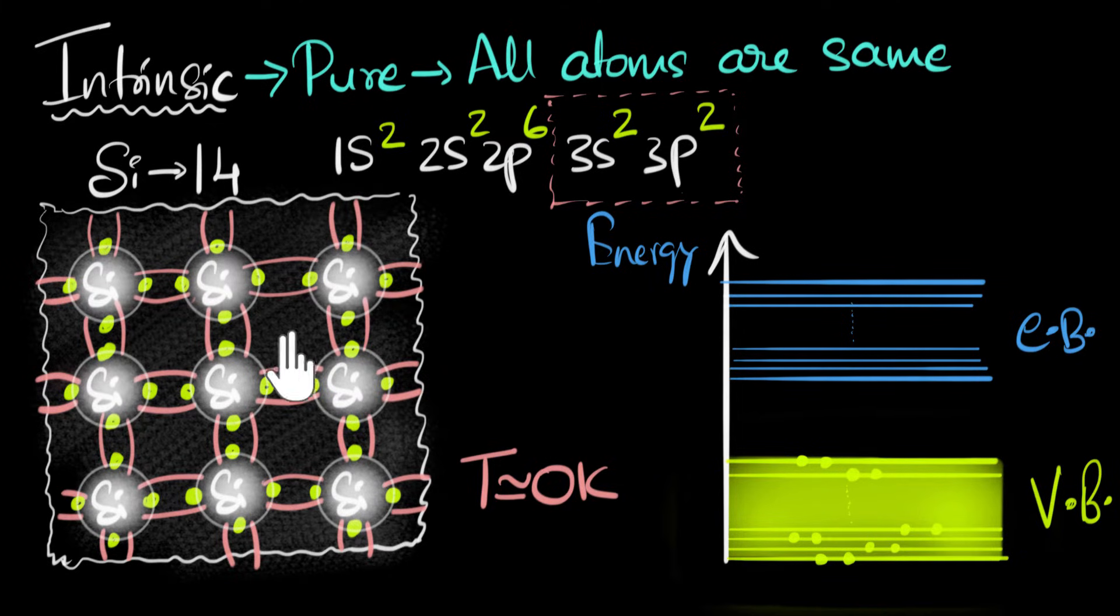All these electrons are filled in this valence band, and there are no empty states available. As a result, if we were to put an electric field over here, none of these electrons would conduct. And the reason for that is if an electron wants to conduct, if it wants to accelerate, its energy should increase, right? More kinetic energy.